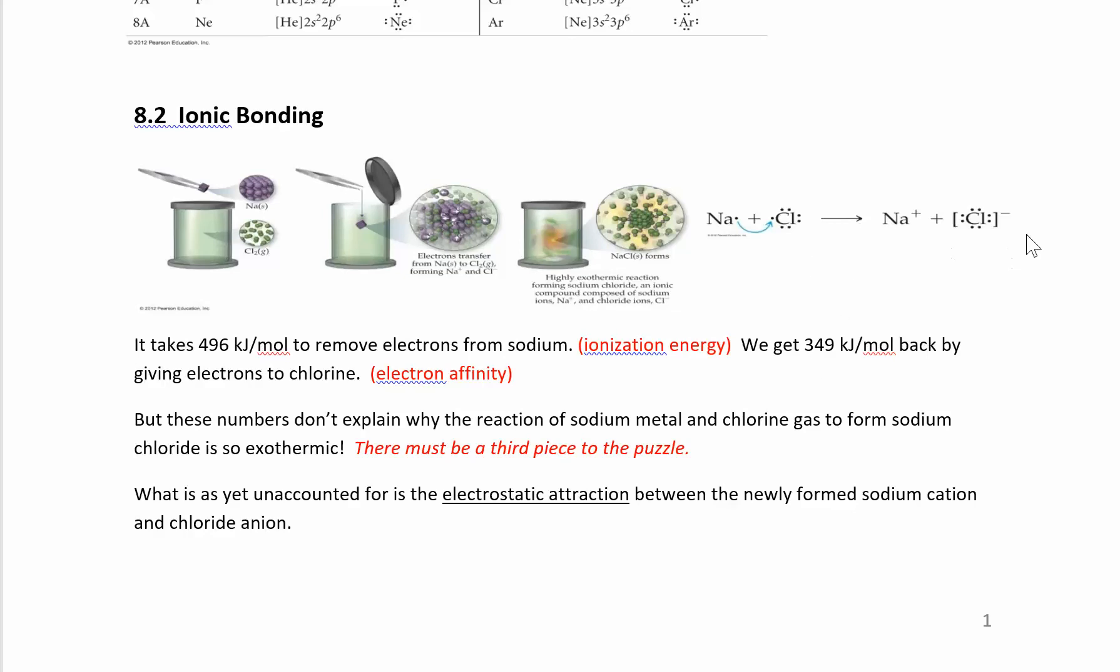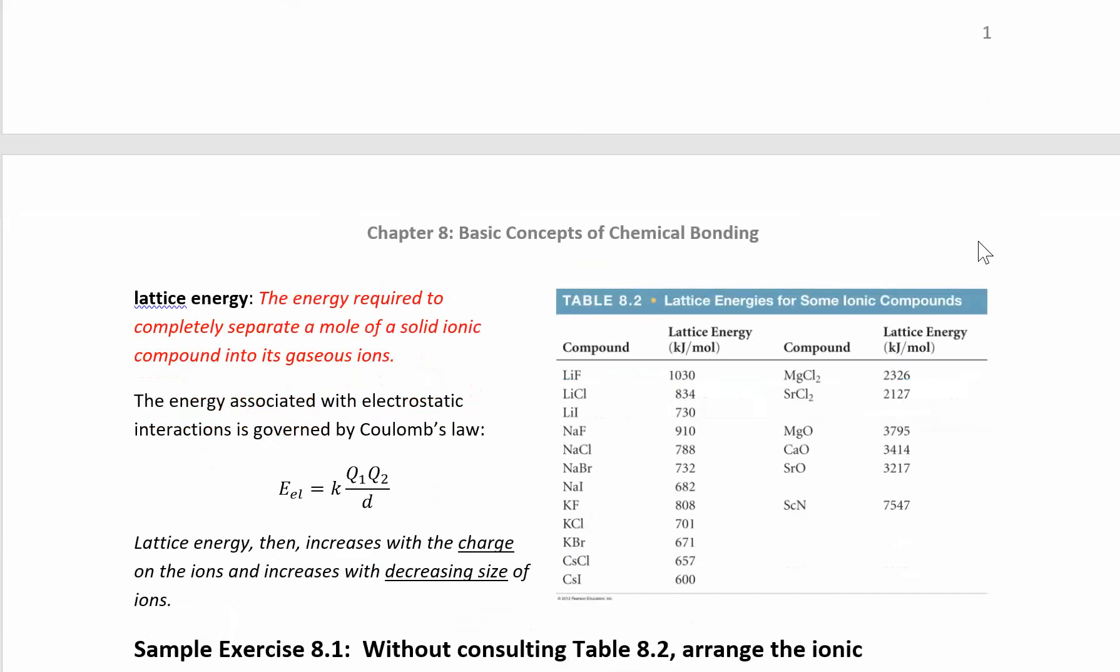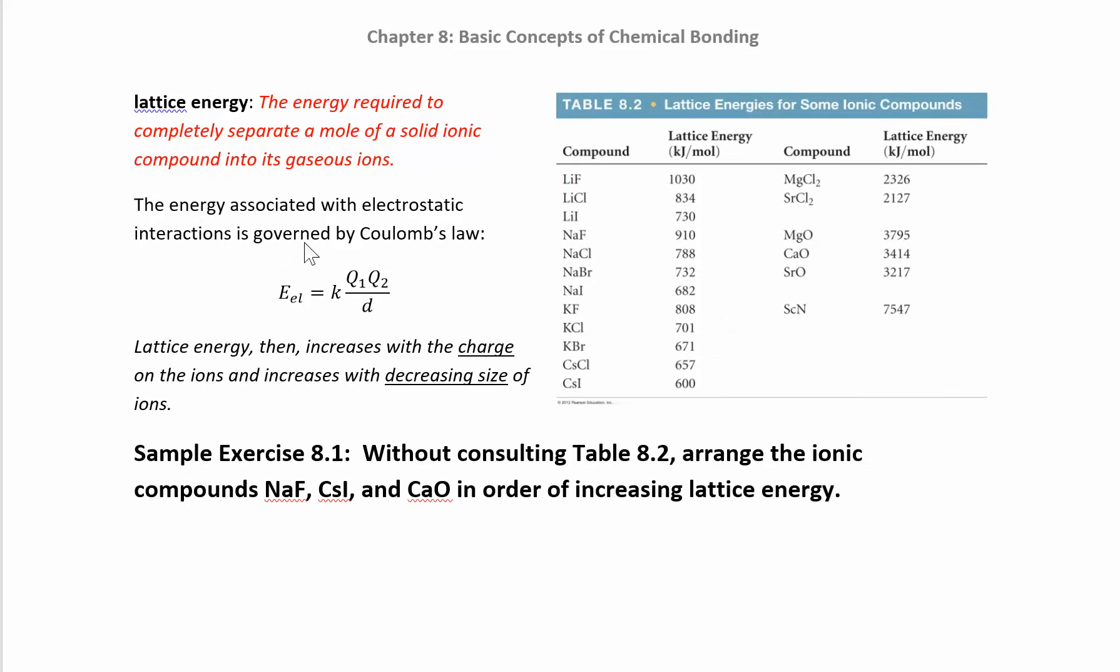When you put them together, now this guy has a positive ion, this one's a negative ion. They're going to be attracted to each other. You have to take into consideration the electrostatic attraction between these two ions, and you can do that by looking at Coulomb's law.